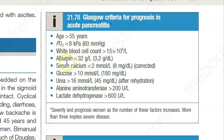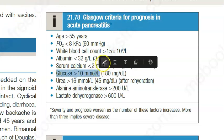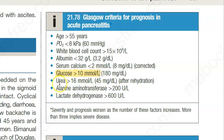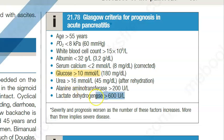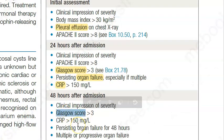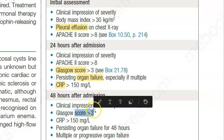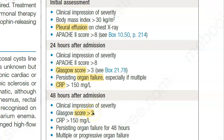The Glasgow criteria for severe acute pancreatitis includes: age over 55, PaO2 less than 60 mmHg, white blood cell count elevated, albumin low, calcium low, glucose elevated, urea elevated, alanine aminotransferase elevated, and lactate dehydrogenase elevated. Note that unlike the Glasgow Coma Scale where a higher score is better, in this scoring system a higher score indicates worse prognosis.